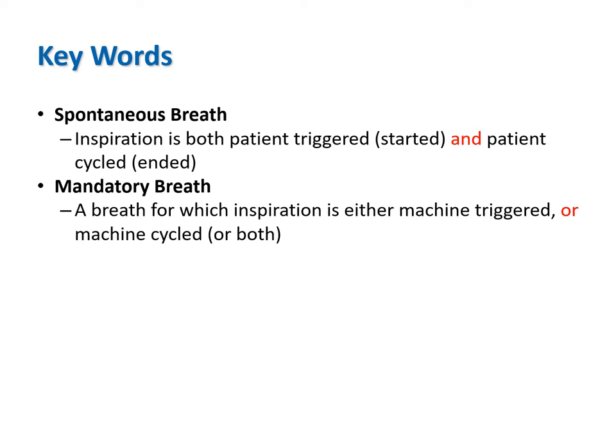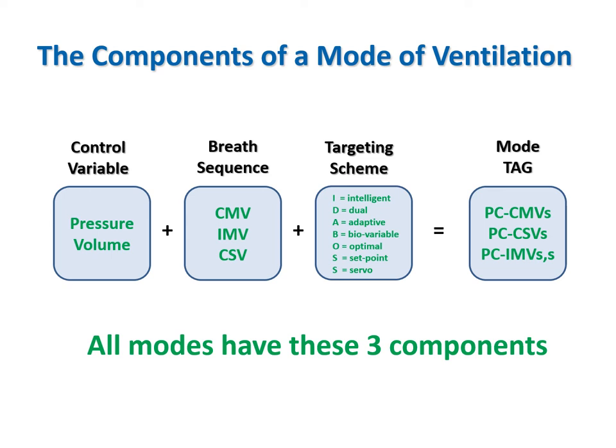A spontaneous breath is one for which the patient retains substantial control of the timing—inspiration is both triggered and cycled by the patient independent of any setting for inspiratory time on the ventilator. In contrast, a mandatory breath is one for which the patient has lost some or all control over timing, meaning inspiration is either triggered or cycled by the machine. The taxonomy specifies three components of a mode: the control variable, the breath sequence, and the targeting scheme. Together they combine to form an abbreviation or tag representing the generic classification. Any mode—past, present, or future—can be classified in this manner.